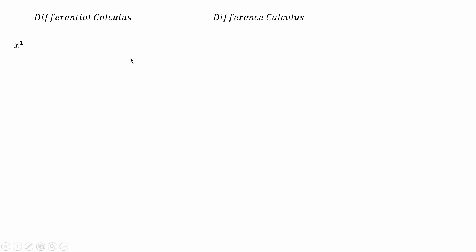In differential calculus, we usually denote the variable with x, such that it may represent any number — like integers 1, 2, 3, real numbers like 1.21 or 3.24, or any irrational or rational numbers. But in difference calculus, we generally denote the variable with n, because it represents only integral values like 1, 2, 3, and so on.